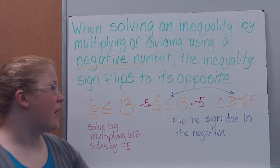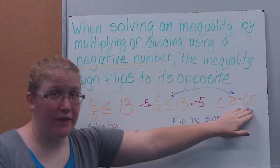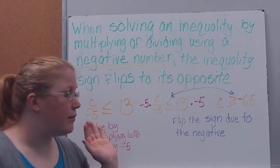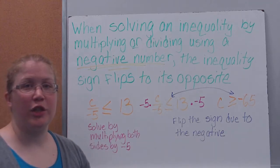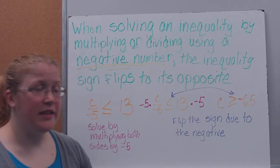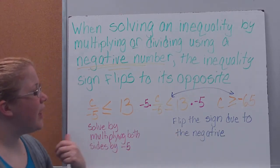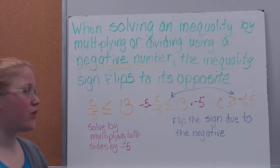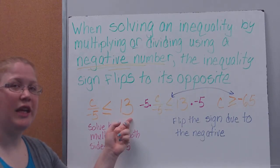Let's check by picking a value greater than negative 65. Negative 70 is less than negative 65, so don't pick that. Negative 60 is greater than negative 65 — think of it as owing $60 versus $65. So let's pick negative 60: plug it in and divide by negative 5. Two negatives make a positive, and 60 divided by 5 gives 12. Since 12 is indeed less than or equal to 13, the answer is correct.